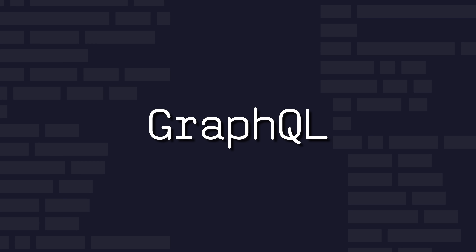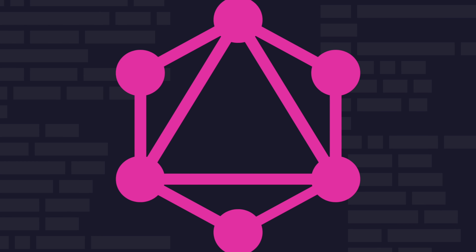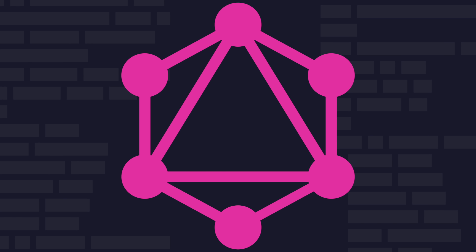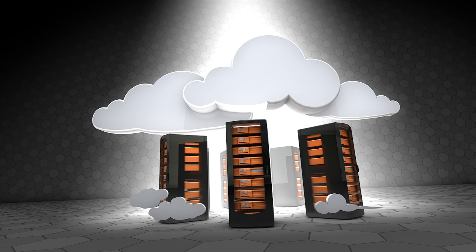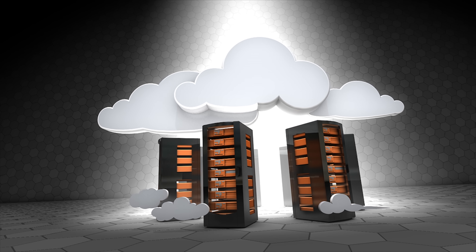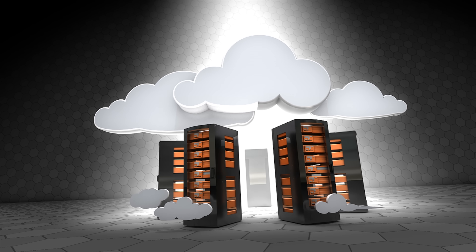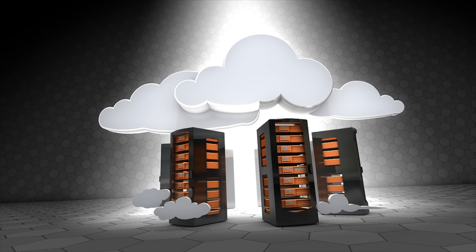GraphQL is a query language for APIs that allows clients to request exactly the data they need, making it an efficient alternative to traditional REST APIs. Back-end developers should understand how to implement GraphQL servers to provide flexible and efficient data access.